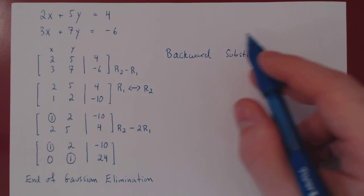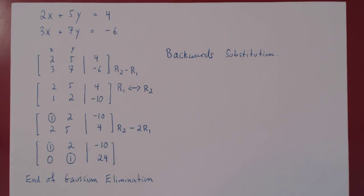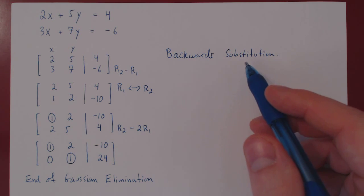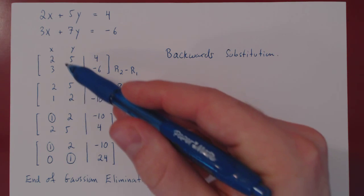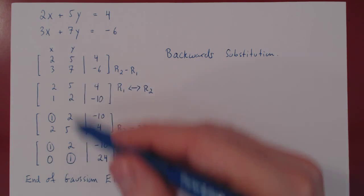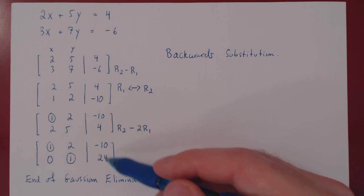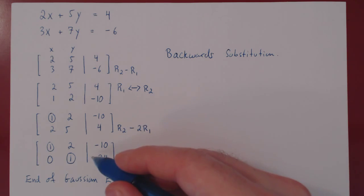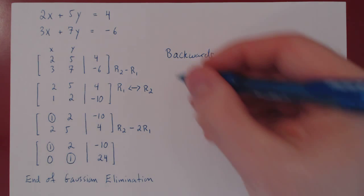The name gives it away: it is a substitution performed backward. It means we start with the very last variable, which is y. And if you look, this row becomes y equals 24. Zero times x plus one times y is y, and the vertical line stands for equals 24. So if we start with the bottom row, the very last row, we get y equals 24.